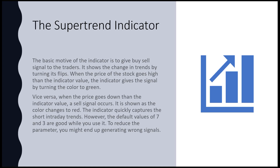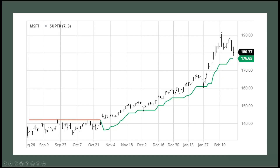The basic motive of the indicator is to give buy and sell signals to traders. It shows the change in trends by flipping. When the price of an asset goes higher than the indicator value, the indicator gives a signal by turning green — it's positive for a buy signal. Vice versa, when the price goes down below the indicator value, a sell signal occurs, shown as a color change to red. The indicator quickly captures short intra-day trends. The default values of 7 and 3 are good, though you can adjust them — reducing the parameters may generate wrong signals.